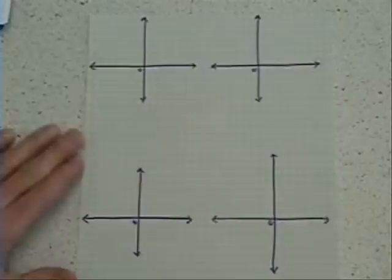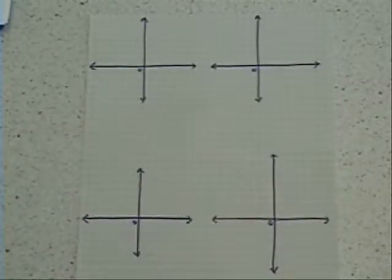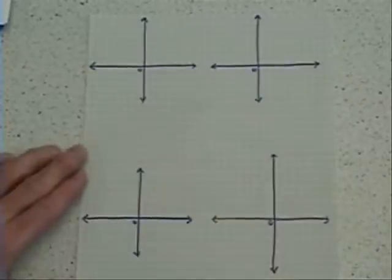In the last video, I showed you how to graph ordered pairs. In this video, I'm going to show you how to graph something else on our coordinate plane. This time, vertical and horizontal lines.